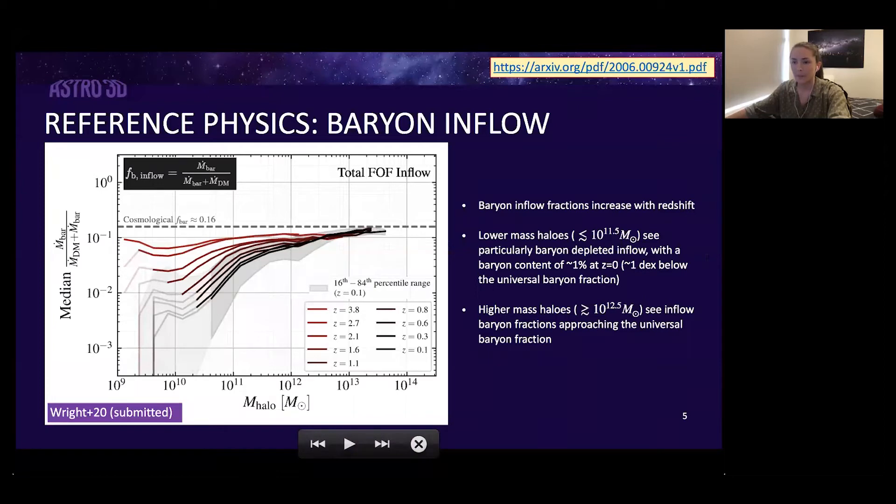When we look at higher mass halos, we do see that halos have baryon inflow rates approaching what we would expect from dark matter, and there's also very little spread. But in general I think we can see that the assumption that inflow is uniformly baryon enriched definitely has some caveats.